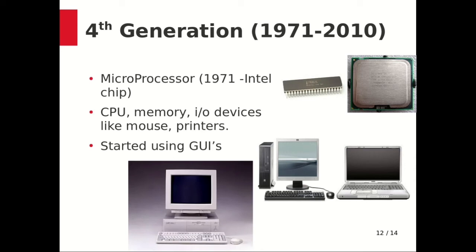The fourth generation starts from 1971 to 2010, characterized in a single word by the microprocessor. Microprocessors brought thousands of integrated circuits built onto a single chip. This generation of computers, which once occupied entire rooms like the first generation, could now fit on a single table or even in the palm of your hand, such as laptops. In 1971, the Intel chip was developed and used in computers, and many improved devices were added like mouse and printers, along with graphical user interfaces.